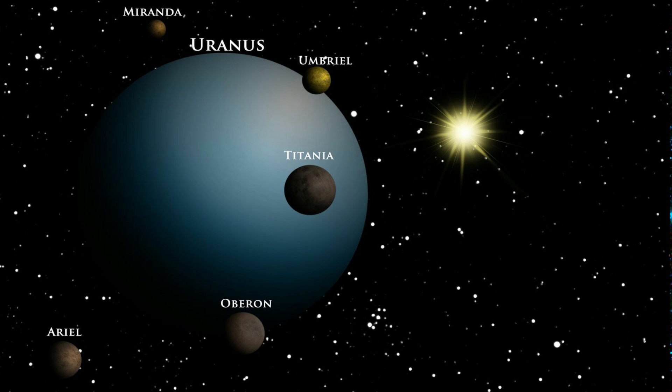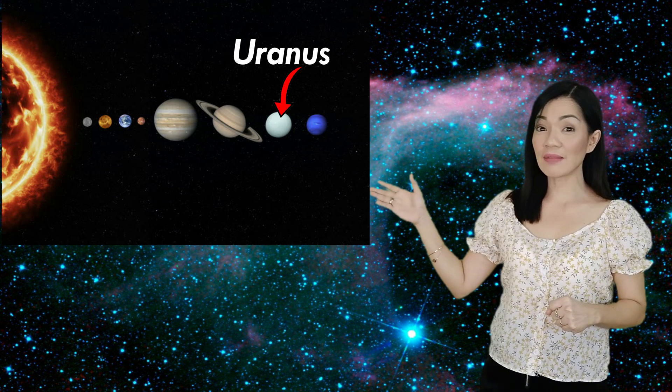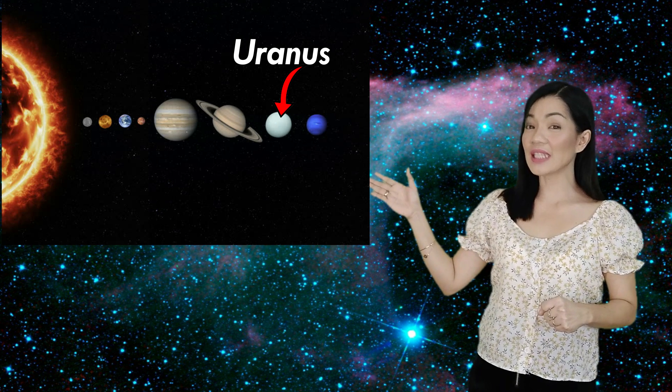Speaking of moons, Uranus has 27 moons. Uranus is the seventh planet from the Sun and it's in between Saturn and Neptune.